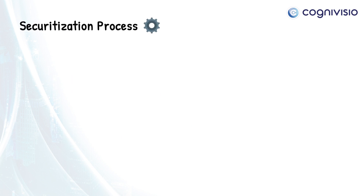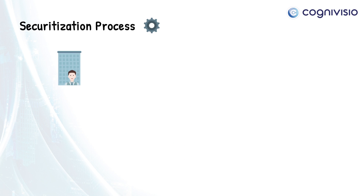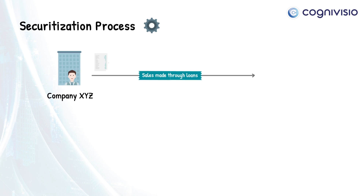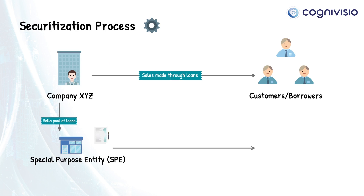Let's begin by explaining the securitization process in the following example. First, as part of its normal business operations, company XYZ makes sales through loans granted to its customers. The company would then establish a special purpose entity, or SPE, and sell it the loans. The loans are now on the SPE's balance sheet.